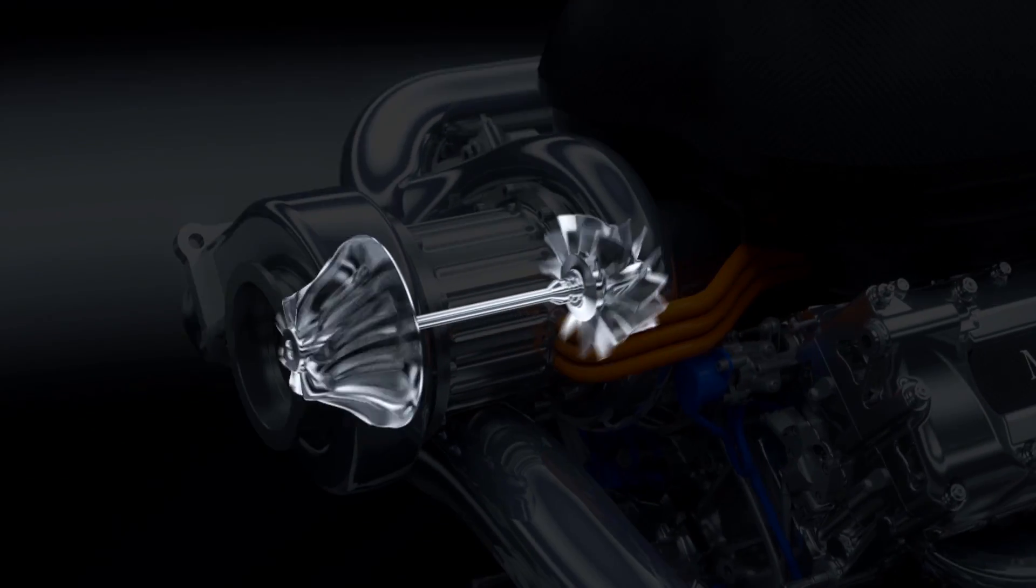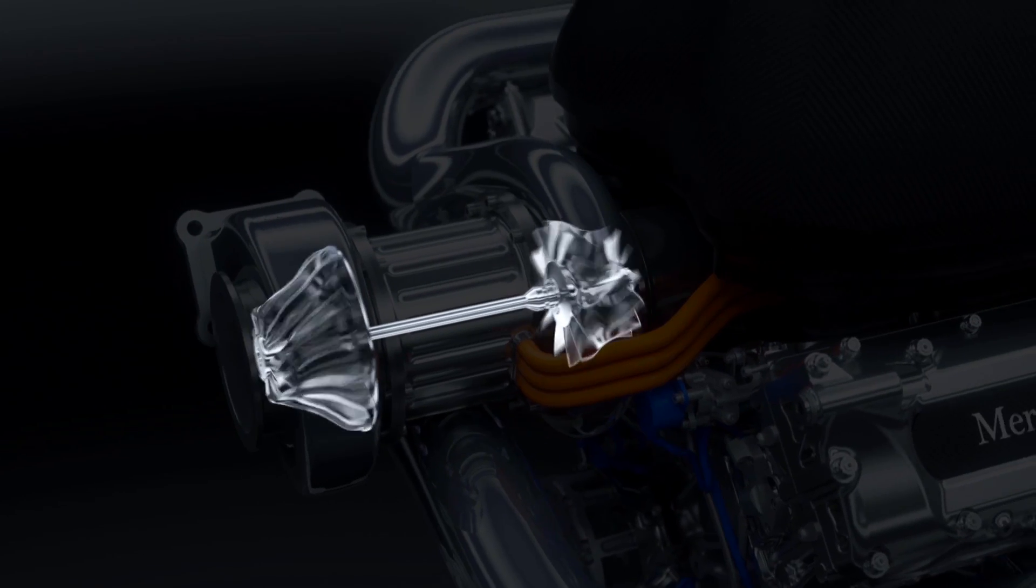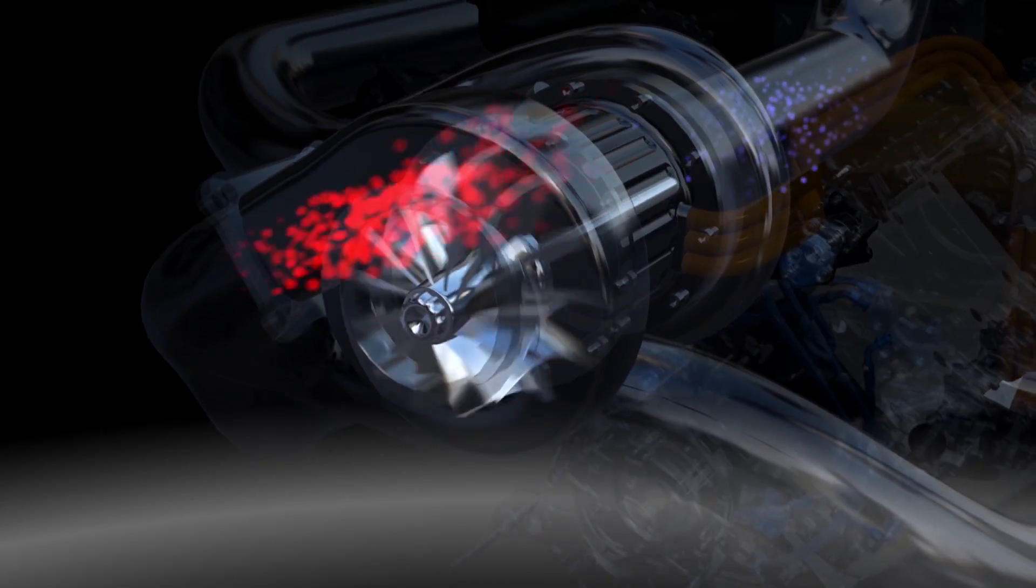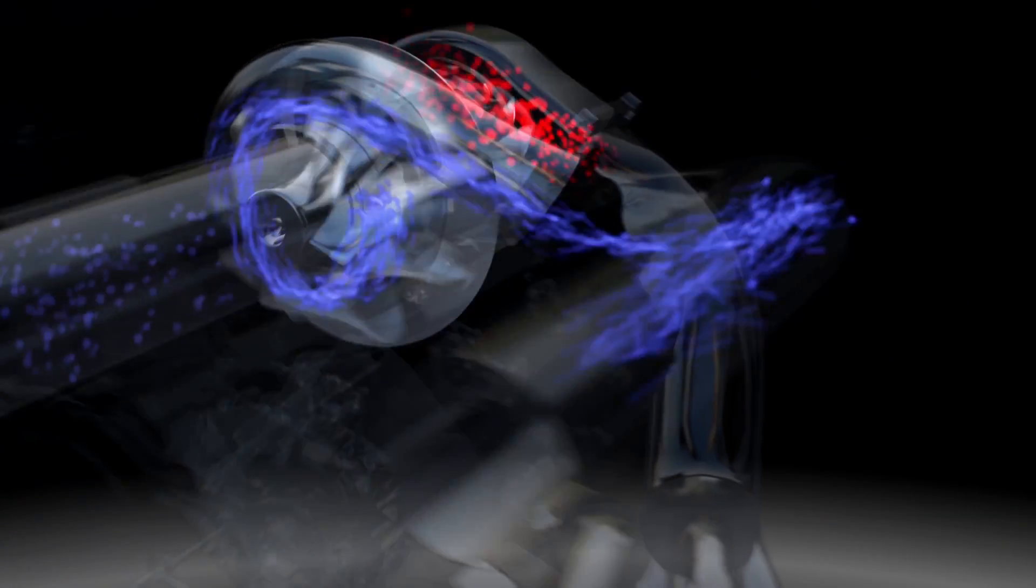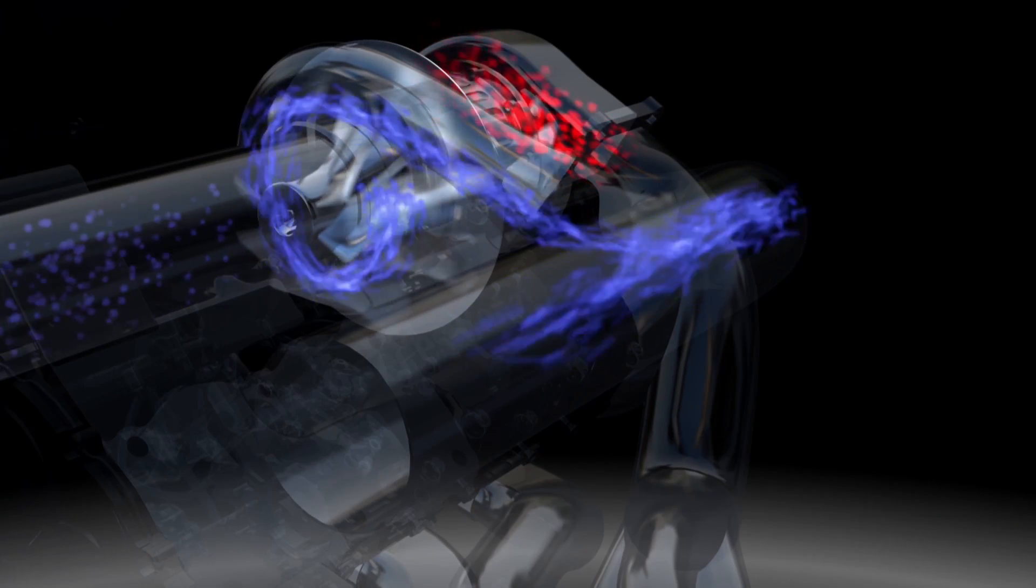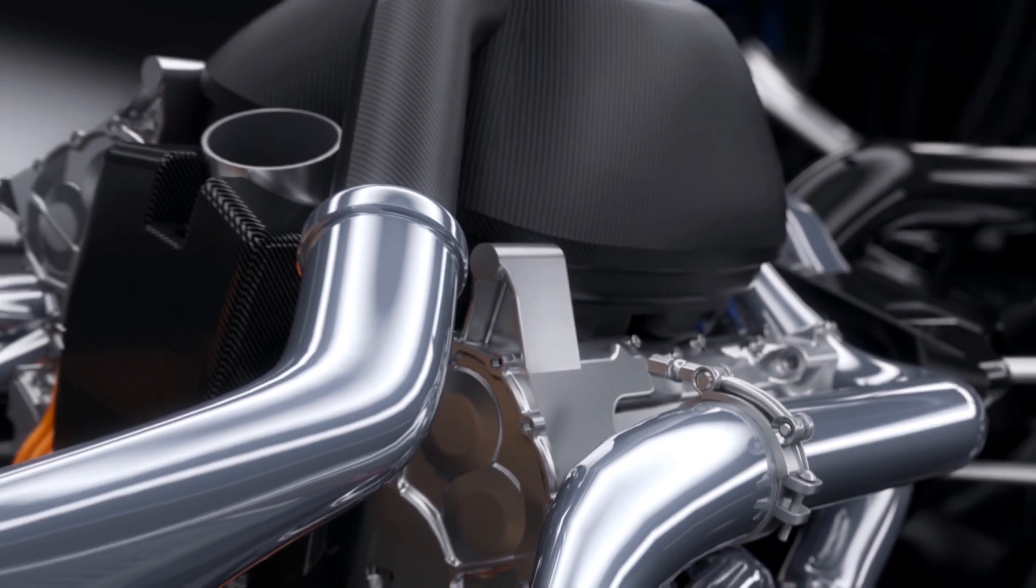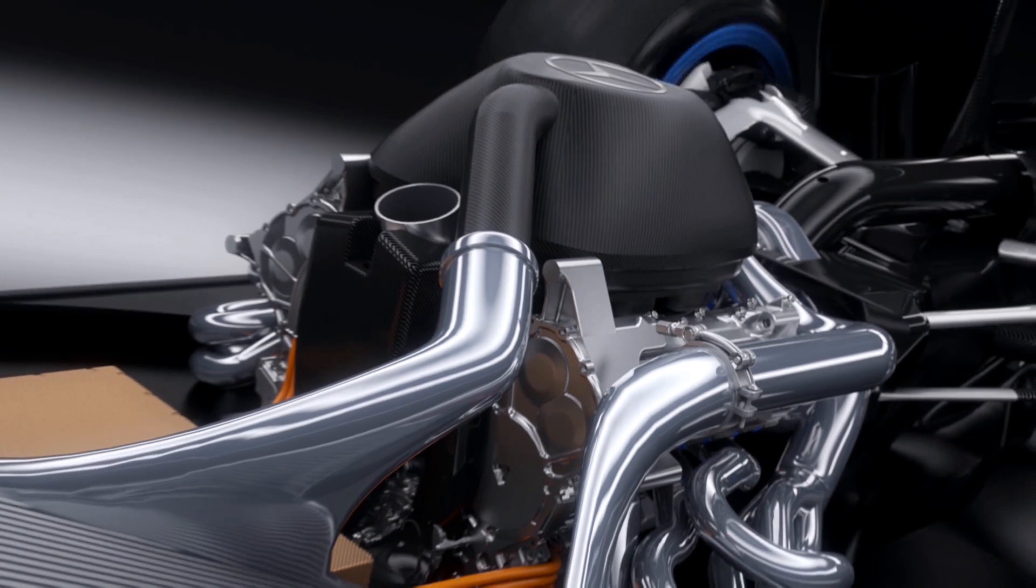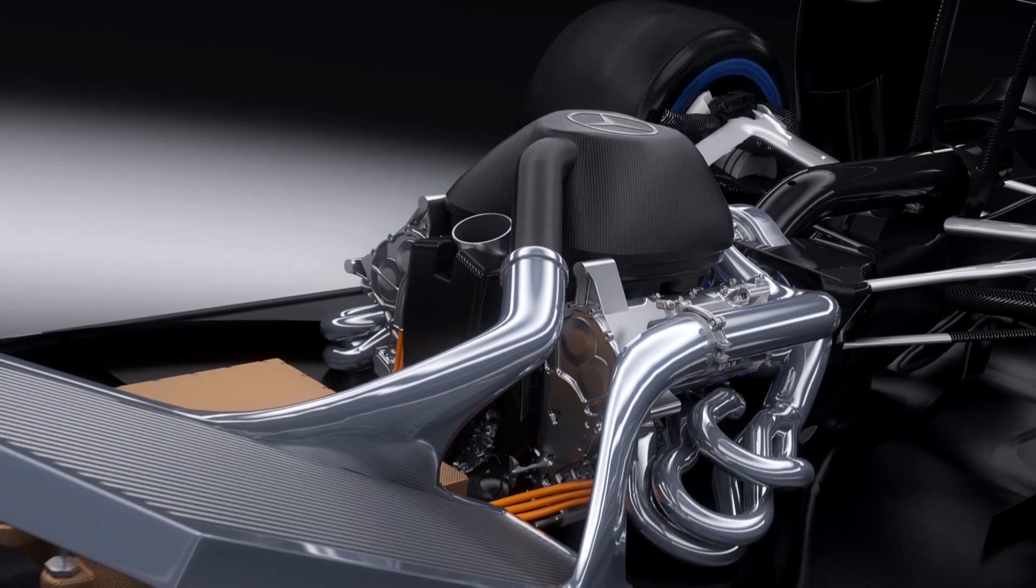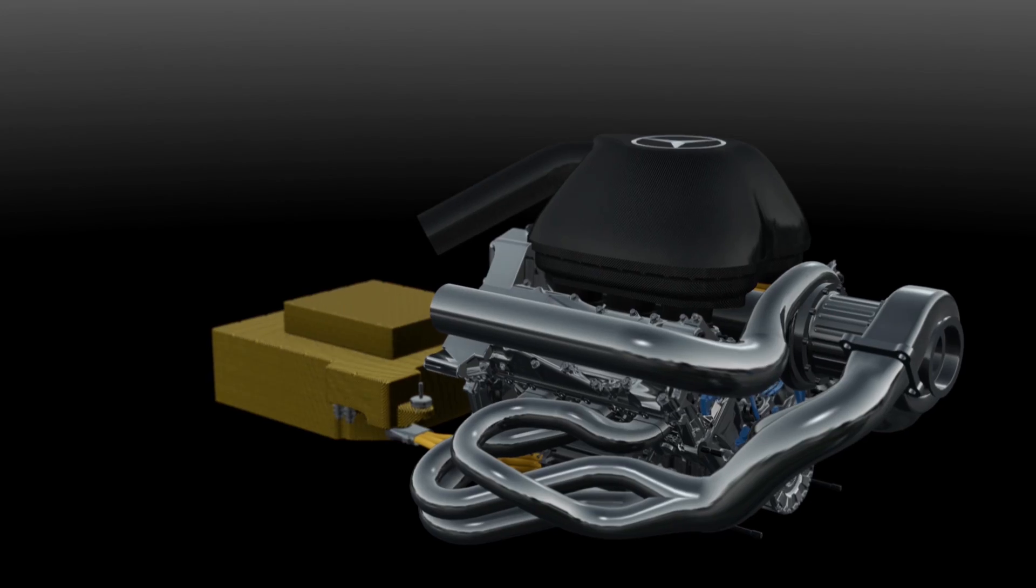It is achieved with a downsized 1.6-liter turbo hybrid engine. The turbo uses exhaust gases to drive a compressor to push more air and therefore more oxygen into the engine. Together with high-pressure direct fuel injection, this makes combustion more efficient, more power using less fuel.